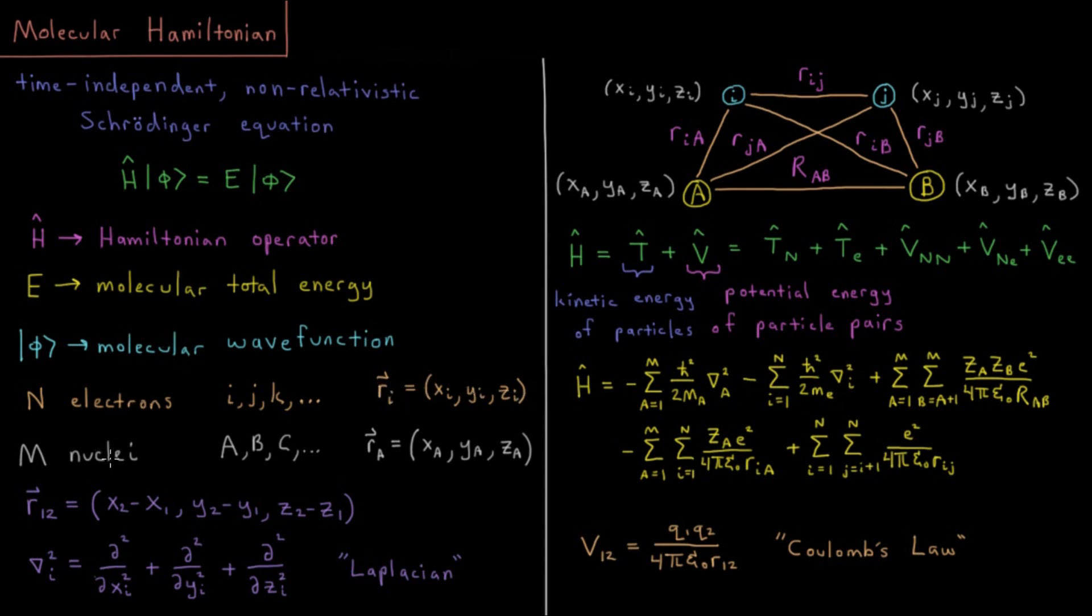Then we have nuclei as well, collections of protons and neutrons which we treat as one point particle. There are m of those. Capital M indicates the total number of nuclei. Our indices are often capital A, B, C, etc. The position of a nucleus is vector rA with components xA, yA, zA.